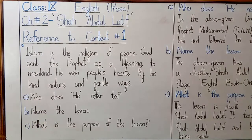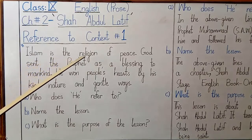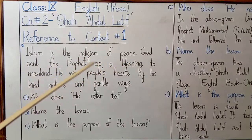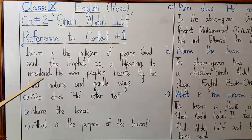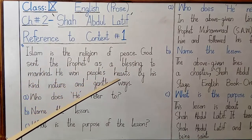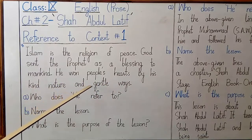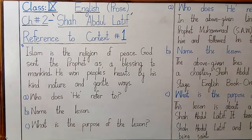Context number 1 is written in front of you on the board: 'Islam is the religion of peace. God sent the prophets as a blessing to mankind. He won people's hearts by his kind nature and gentle ways.' This is the context given to you, and there are 3 questions given along with this context.